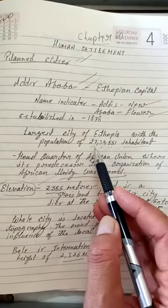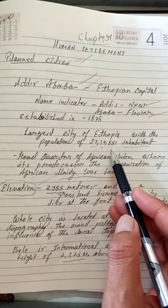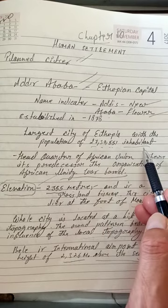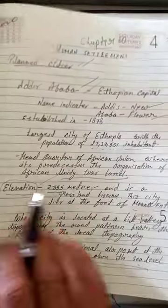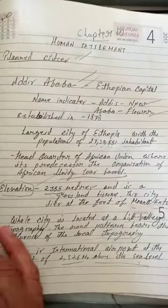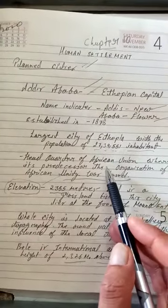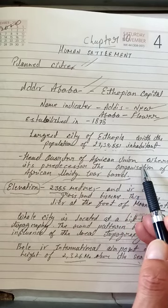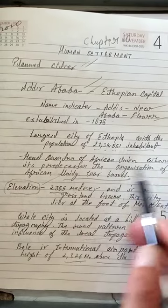This city was established in 1878 and it is the largest city of Ethiopia, with a population of 27,39,551 inhabitants. This city is also the headquarter of the African Union, which is a trading bloc whose predecessor, the Organization of African Unity, was based here.